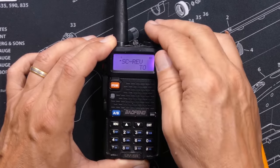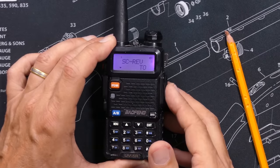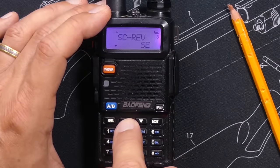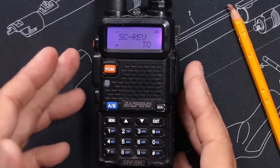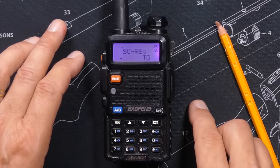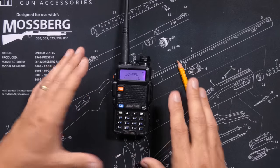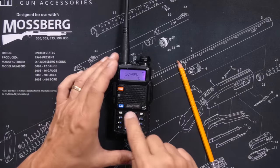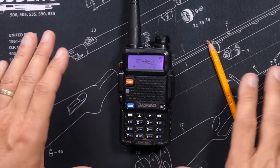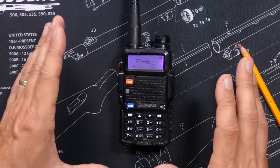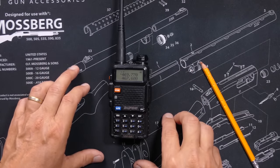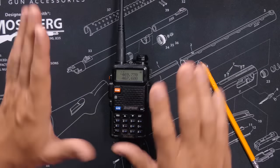You can control what the radio does every time it picks up a signal with the scan resume option. That is menu option number 18, and there are three settings to choose from: TO, CO, and SE. TO, short for timeout, means when the radio hears something, it will stop and listen for a few seconds, and then no matter what, just continue on scanning. CO, short for carrier operation, means the scanning will stop when it hears something and hold there until the transmission ends, and the radio will then continue on with its scan.